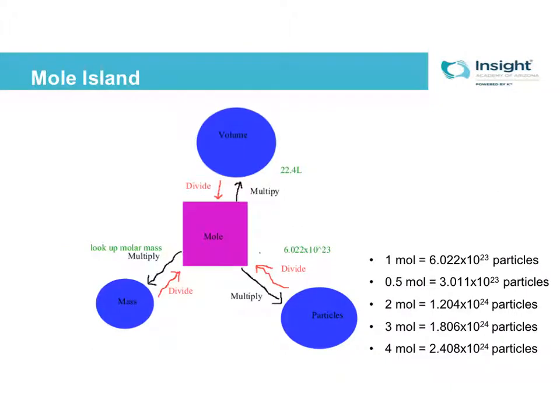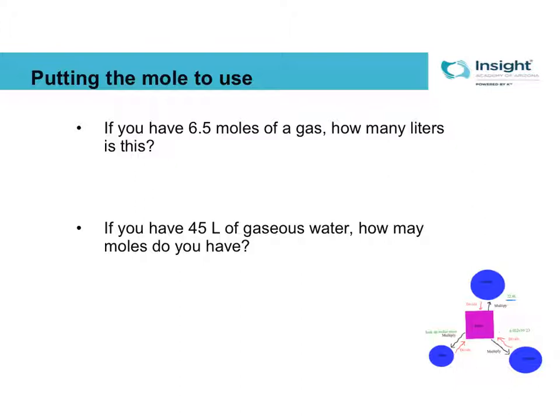You remember this from last time. We've got our mole island. If we are going on to mole island, we divide by the number. If we are going off of mole island, we multiply by the number. And when dealing with volume, the number in green right there is 22.4. Also got your handy-dandy little cheat sheet there. So, let's try some problems.